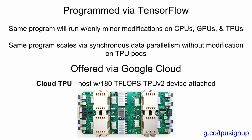One of the things we've really tried to focus on is not just the hardware level, but how we actually express machine learning models in a way that makes it easy to get good performance. We've focused on high-level programming abstractions in TensorFlow so that the same program will run with minor modifications on CPUs, GPUs, or on these new TPUs. That same program will scale with synchronous data parallelism without modification on the pods—if your program is amenable to larger batch sizes, you can just say you'd like eight or 64 devices, and it just goes.